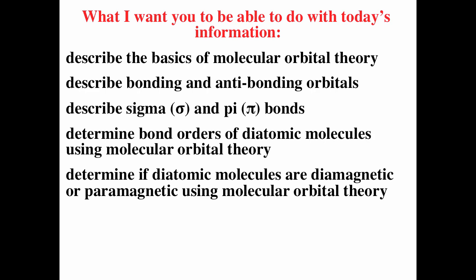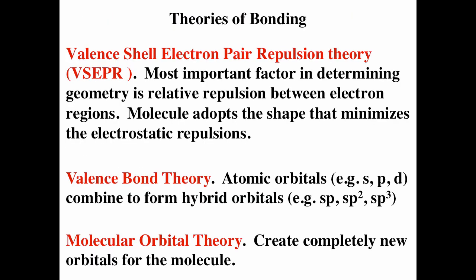Valence shell electron pair repulsion theory says a molecule will take the shape that minimizes repulsion between regions of electron density. Valence bond theory describes how atomic orbitals change into hybrid orbitals, which have angles consistent with the shapes from VSEPR theory. Molecular orbital theory is completely different — in MO theory we create completely new orbitals for the molecule.